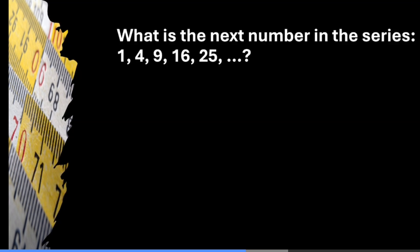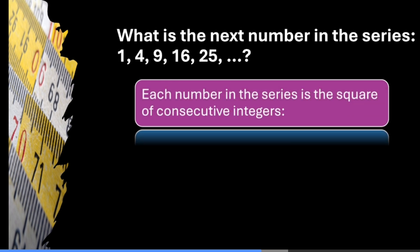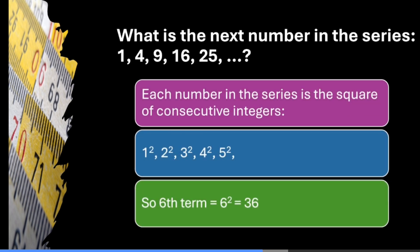What is the next number in the series 1, 4, 9, 16, 25? Observe — all the numbers are perfect squares. 1 is the square of 1, 4 is the square of 2, 9 is the square of 3, 16 is the square of 4, 25 is the square of 5. So the next term must be the square of 6, which equals 36.